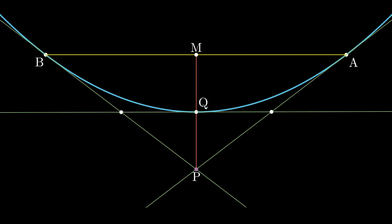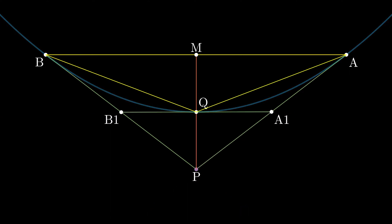The tangent at Q intersects the tangents at A and B at A1 and B1 respectively. Now, when we look at the arc between points Q and A, it is also a part of the parabola. And the tangents at Q and A intersect at A1. So, as we saw before, a line parallel to the axis of a parabola passing through A1 bisects the chord AQ.